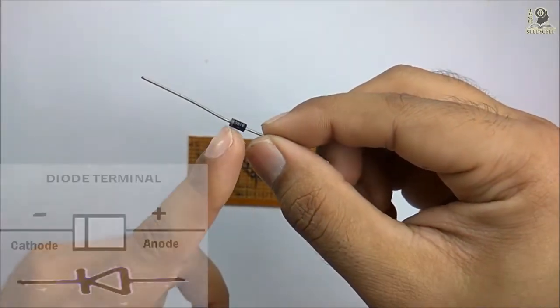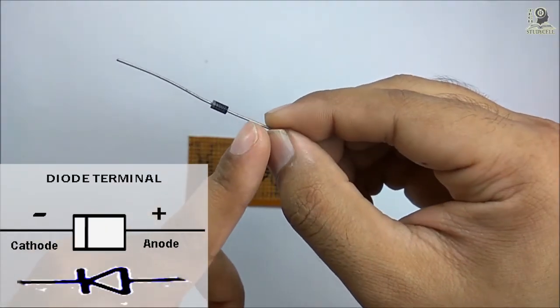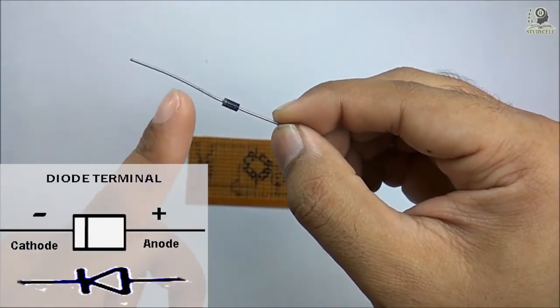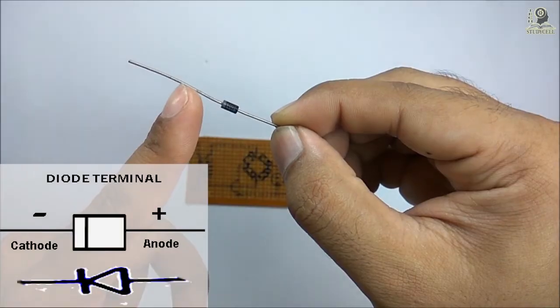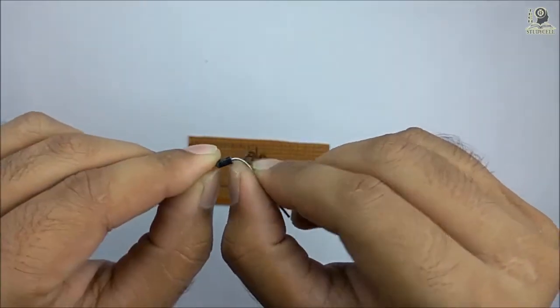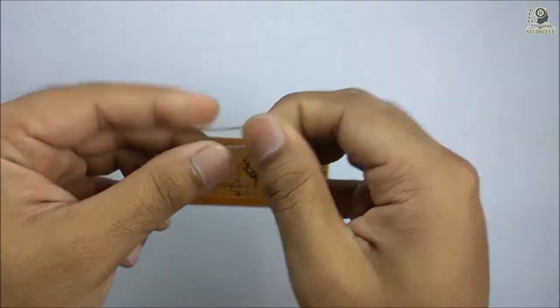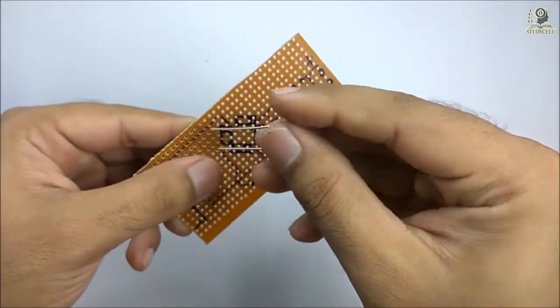In this diode, here is the band. Looking at this band, I can say this terminal is anode or positive terminal and this is a cathode or negative terminal of the diode. So after identifying the anode and cathode, I can easily put it on this PCB.